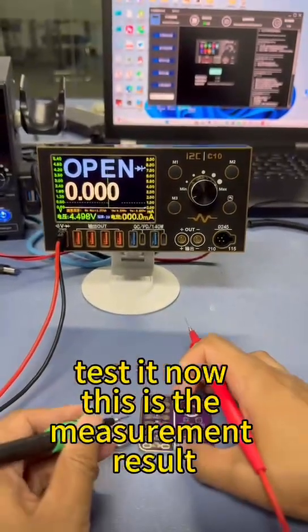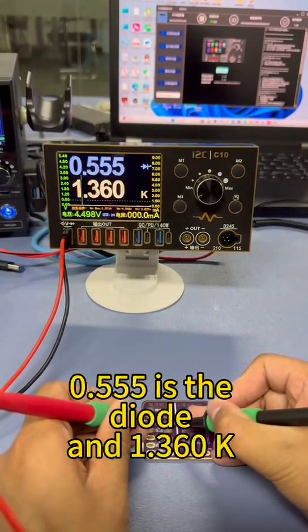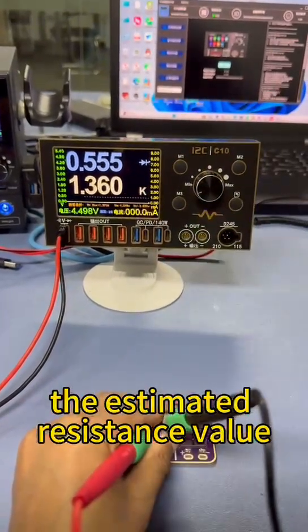Test it now. This is the measurement result. 0.555 is the diode and 1.36 ks is the estimated resistance value.